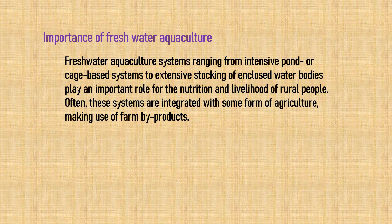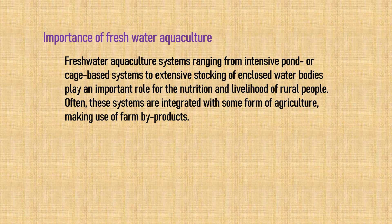Freshwater aquaculture systems — ranging from intensive pond or cage-based systems to extensive stocking of enclosed water bodies — play an important role in the nutrition and livelihood of rural people. These systems are often integrated with agriculture, making use of farm byproducts. They help maintain nutritional needs and provide livelihood through selling excess harvested fish.